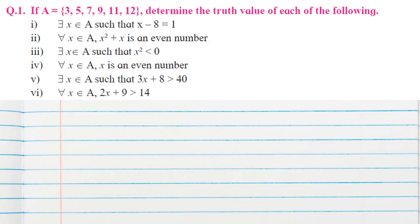Question number 1 - the set A is {3, 5, 7, 9, 11, and 12}. Determine the truth value of each of the following statements. The first statement uses the 'there exists' quantifier.